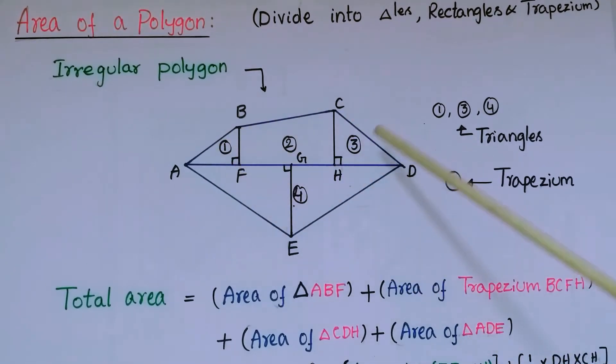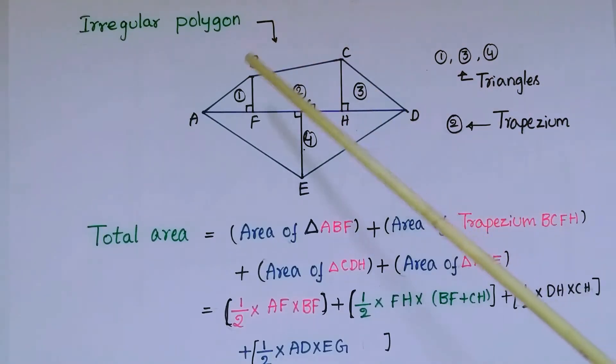See here one, two, and three - these three triangles and one trapezium. So we have to add all these areas, then we will get the total area. See here, total area is equal to area of...